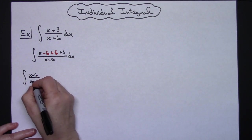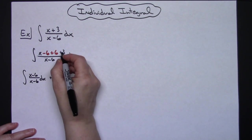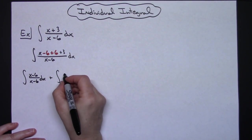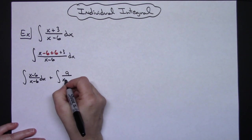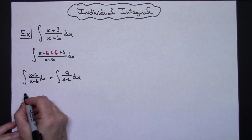So I could separate this into the integral of (x-6)/(x-6) dx and then I could do the integral of adding the 6 and the 3 right there, so 9 over the x-6 dx.